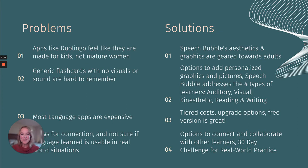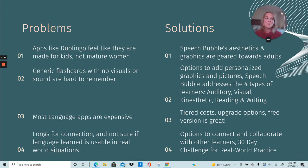Problems and solutions. We wanted to focus on certain pain points of our users and provide solutions for those pain points. Apps like Duolingo feel like they're made for kids, not mature women. So we really wanted Speech Bubble's aesthetics and graphics to be geared towards adults. A lot of generic flashcards don't have visuals or sound and they're hard to remember. So we really wanted to focus on data-based learning structures such as appealing to the four types of learners: auditory, visual, kinesthetic, reading, and writing. Most language apps are expensive, so we wanted to offer tiered costs, upgrade options, and make sure that our free version is awesome.